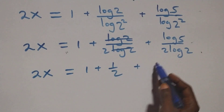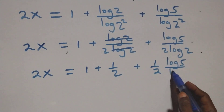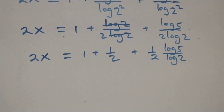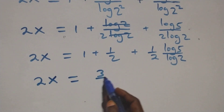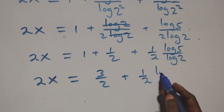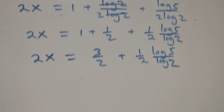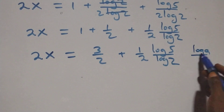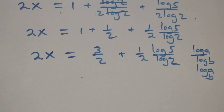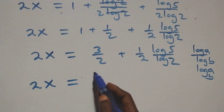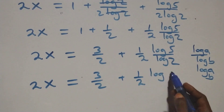So we have 2x equals 1 plus 1 over 2 plus (1 over 2)(log 5 over log 2). This becomes 2x equals 3 over 2 plus (1 over 2)(log 5 over log 2). Applying the change of base rule — log a over log b equals log base b of a — we get 2x equals 3 over 2 plus (1 over 2) log base 2 of 5.